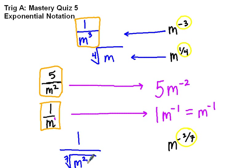Because of the negative, we're in the bottom of a fraction. Because of the fraction in the exponent, we have a root. So this is m squared and the seventh root of m squared.